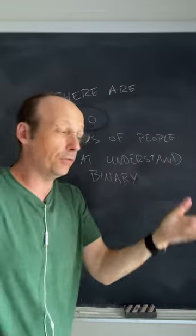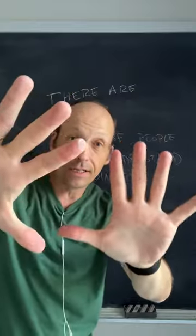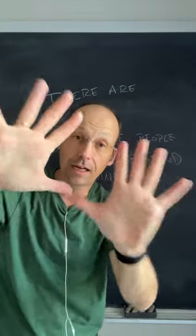The decimal system uses numbers zero, one, two, three, four, five, six, seven, eight, nine because we have zero, one, two, three, four, five, six, seven, eight, nine fingers.